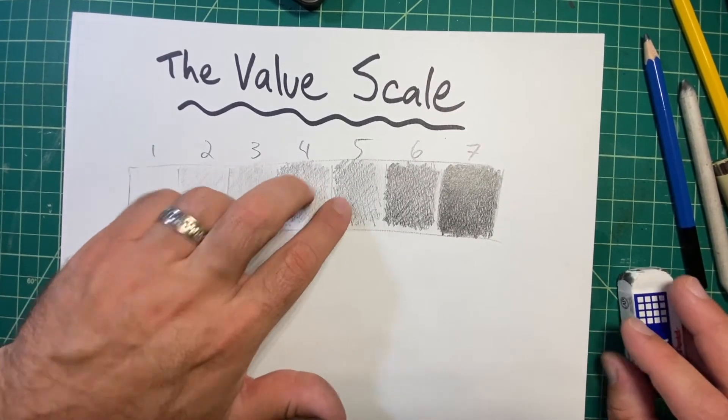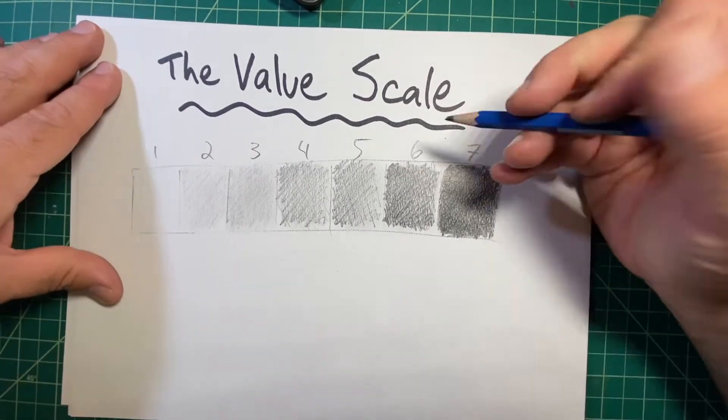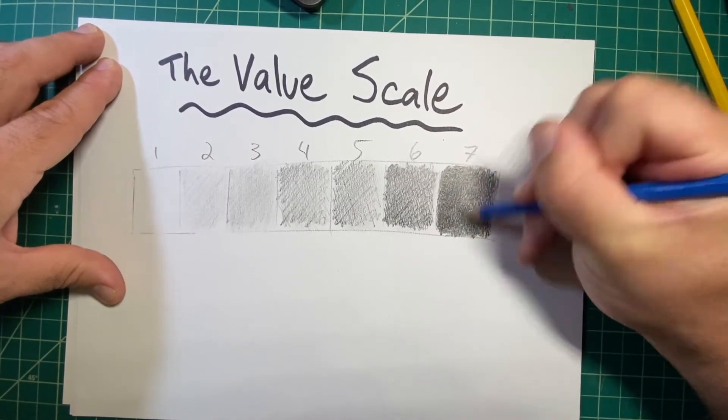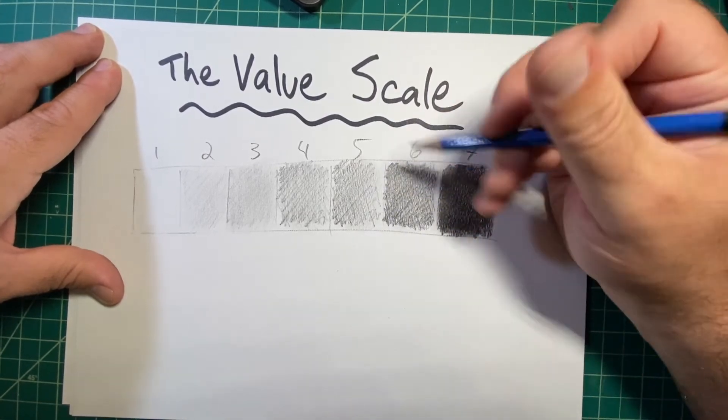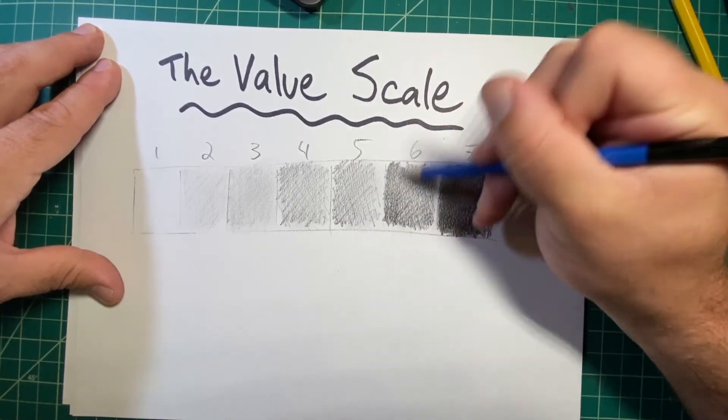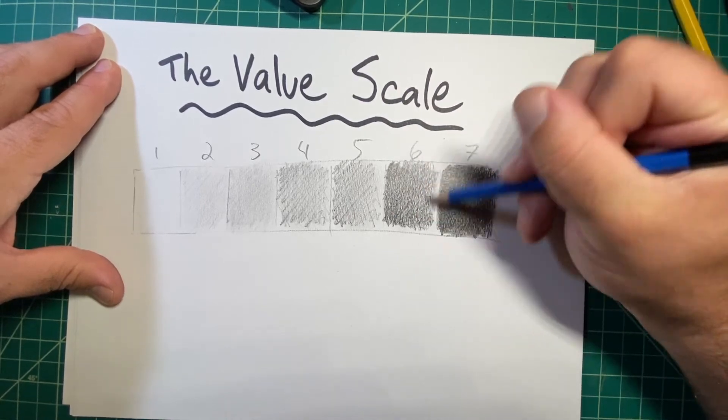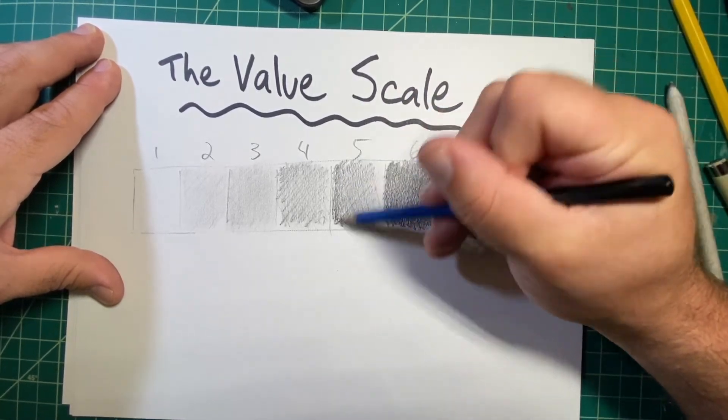So what I'm going to do is I'm going to try to make seven even darker by pressing harder. I'll make six a little bit darker. And I'll make five a little bit darker too.